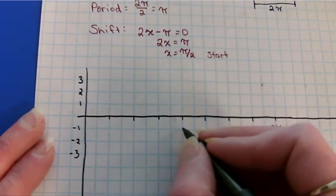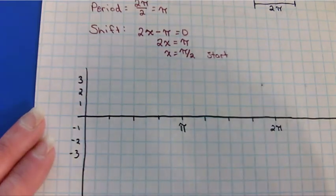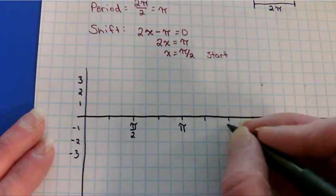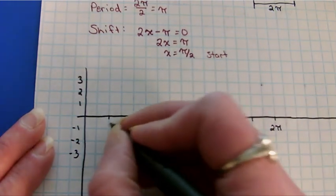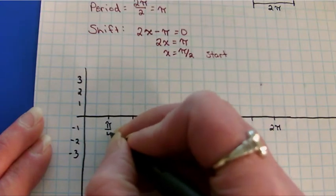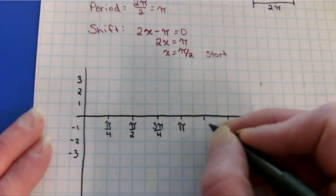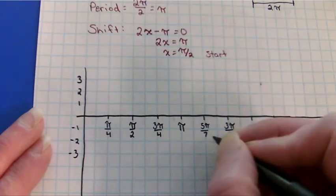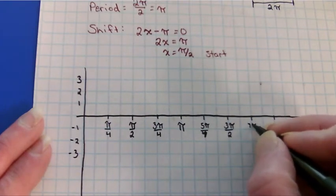I'm going to go halfway in between. So at π would be here. Halfway in between would be π/2. This would be 3π/2. This would be 3π/4. This would be 3π/4. 5π/4. 5π/4. Whoops, over 4, not 7. And 7π/4.